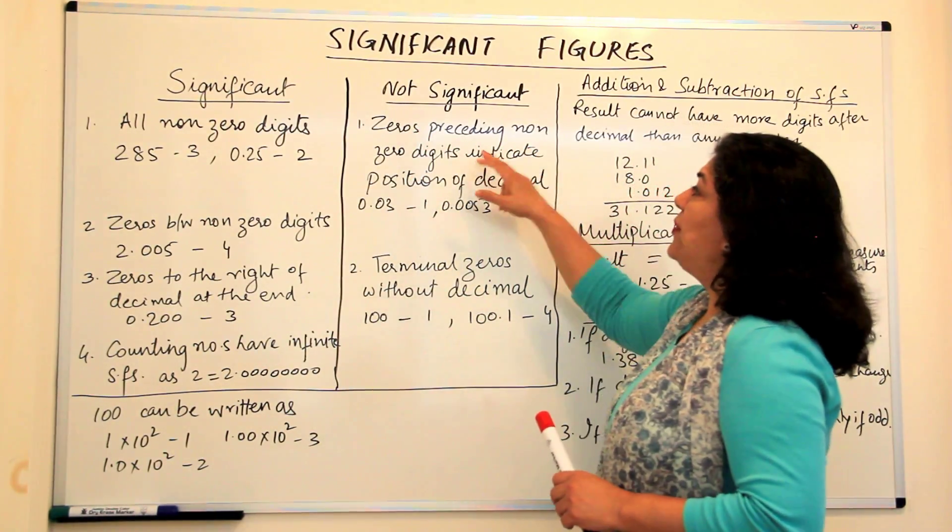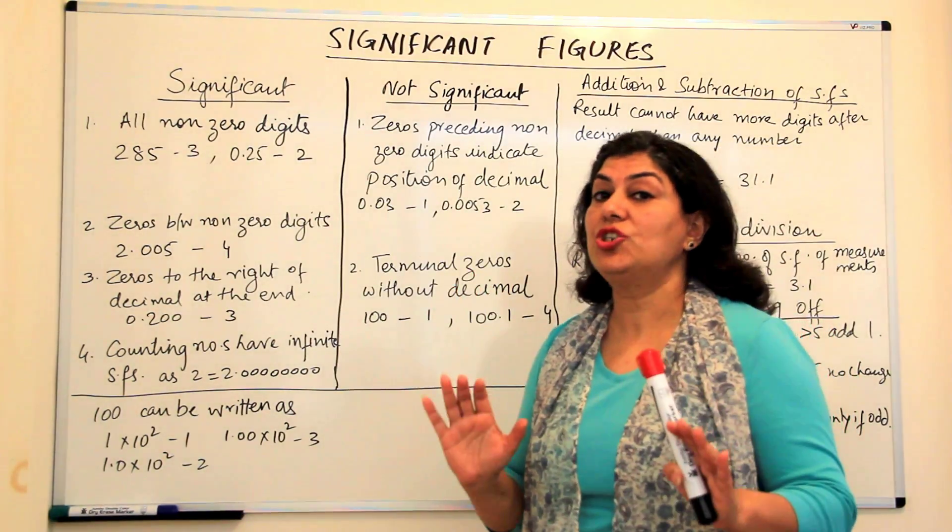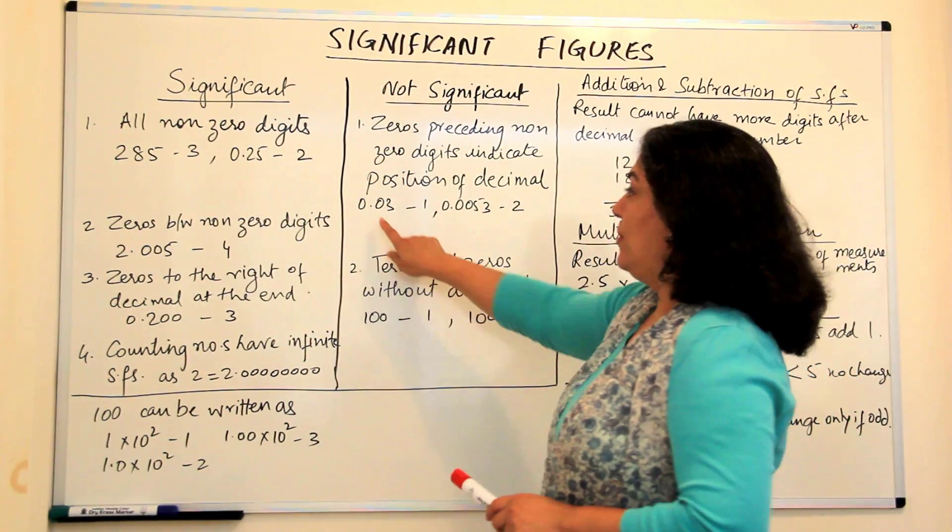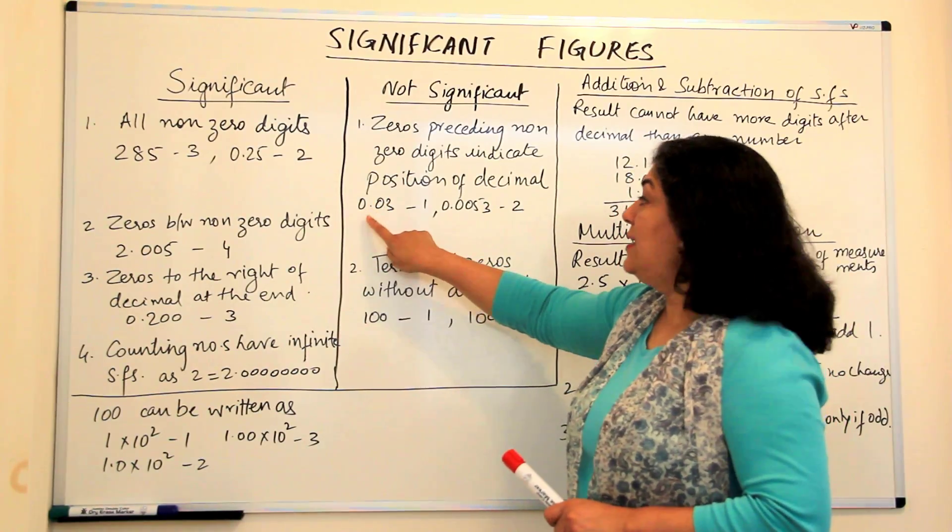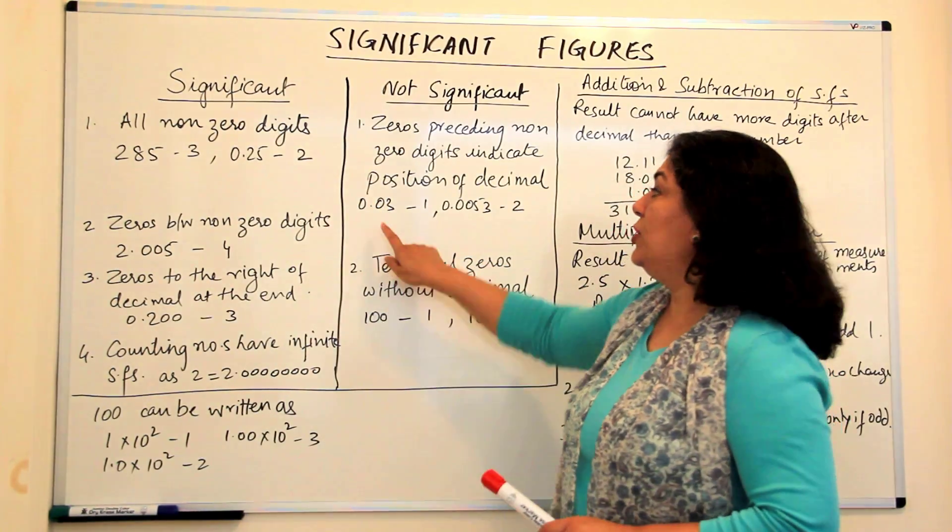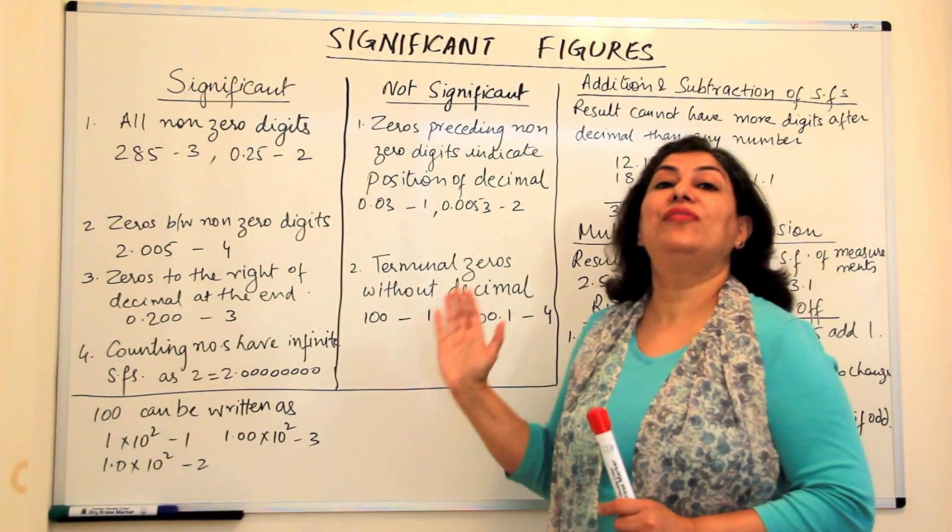The zeros which are preceding non-zero digits, they only indicate the position of the decimal. Look at this. This is 0.03. These zeros are only used to tell you that the three falls at the second place of decimal.